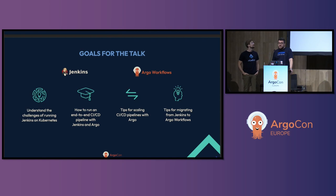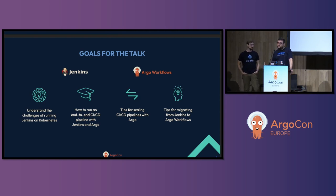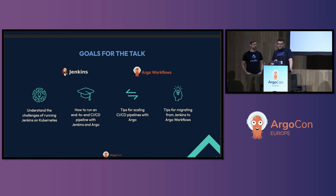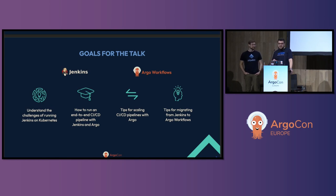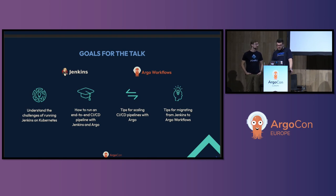Today the goal for this talk is: first, we're going to go over the challenges of running Jenkins on top of Kubernetes. Then we'll see an example of an end-to-end CICD pipeline — first using a hybrid strategy between Jenkins and Argo CD, followed by an Argo-only solution. Finally, we'll give you some tips and tricks on how to run those CICD pipelines and how to migrate from Jenkins to Argo Workflows.